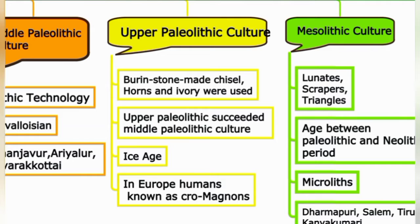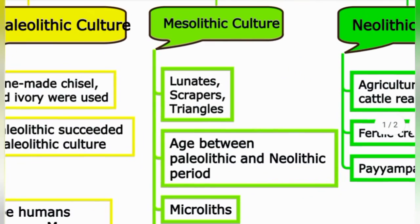In the Mesolithic culture, the main tools are Lunates, Scrapers, and Triangles. Lunates are tools in crescent shape. Scrapers work like a vegetable peeler — used for scraping surfaces. Triangles are small triangular-shaped tools. These are the key microlithic tool types of the Mesolithic period.